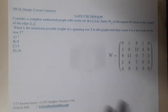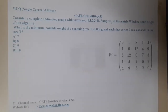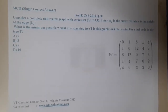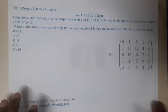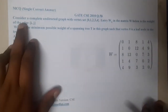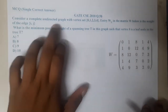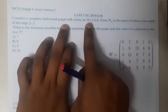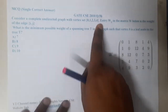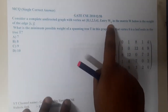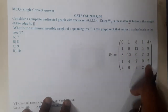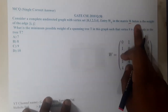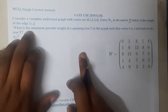Hello guys, we are back with our next lecture. Let us go through the next question: GATE CSC 2010 question 50. Consider a complete undirected graph with vertices 0, 1, 2, 3, and 4. The entry w(i, j) in the matrix is the weight of edge (i, j).